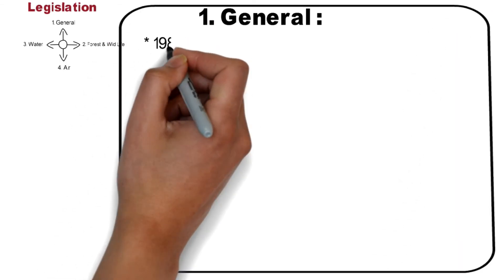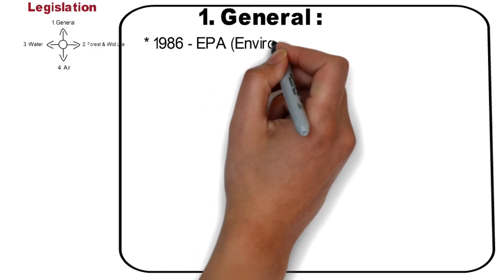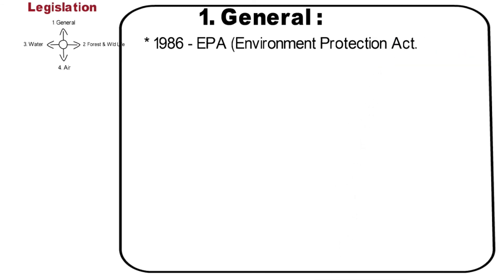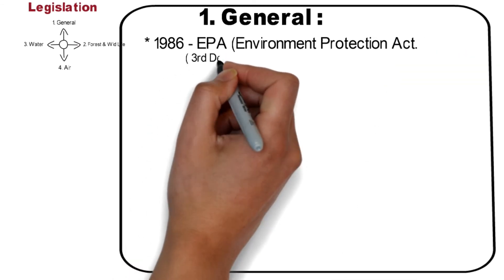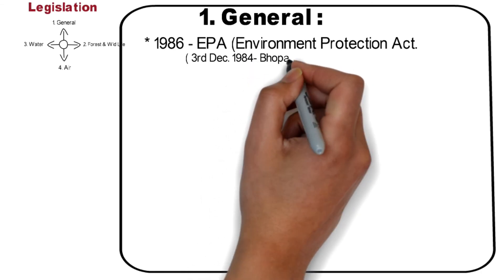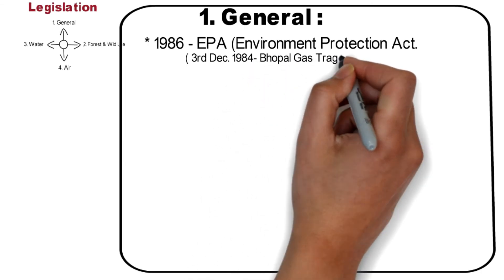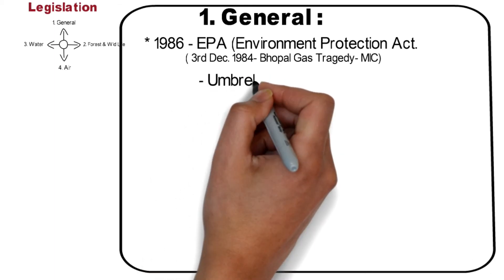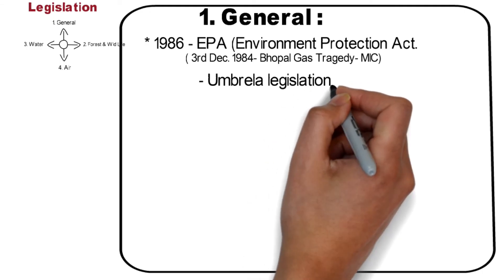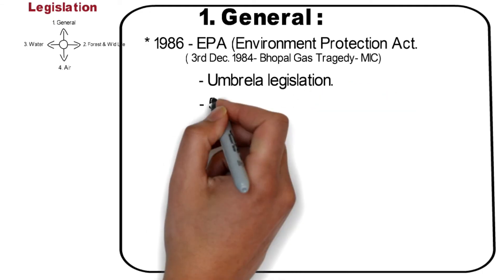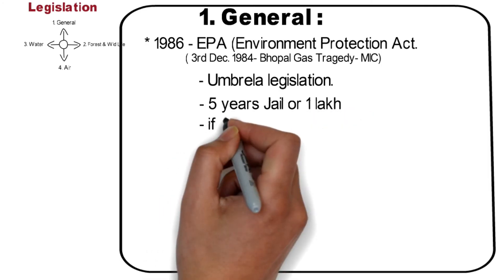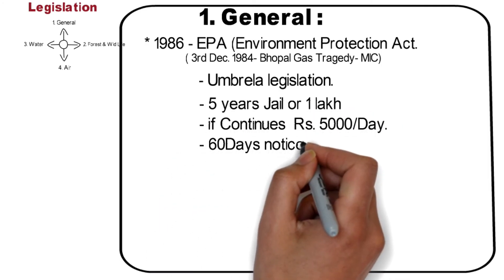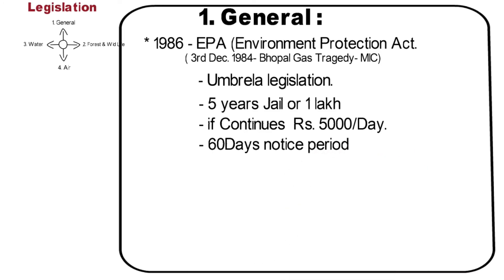The Environment Protection Act of 1986 came into force soon after the Bhopal gas tragedy on 3rd December 1984. The Bhopal gas tragedy was a gas leak incident at Union Carbide India Limited, a pesticide plant in Bhopal. The Environment Protection Act of 1986 is considered an umbrella legislation. The act covers all forms of pollution and provides safe standards for the presence of various pollutants in the environment. It prohibits the use of hazardous material unless prior permission is taken from the central government.